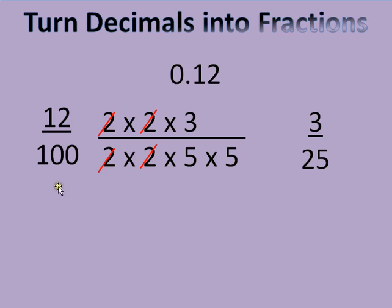So twelve divided by four is three. And one hundred divided by four is twenty-five. I could do that, too. But I like to make my prime factorizations, because when I cross out those numbers, I'm always going to get the most simplest form.